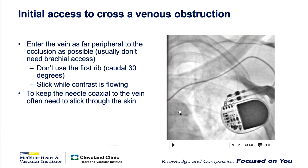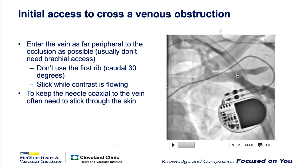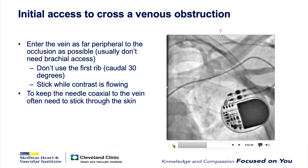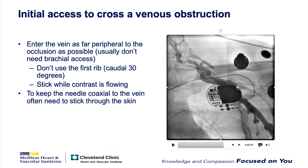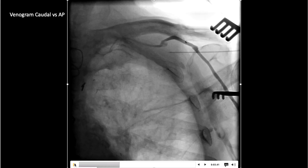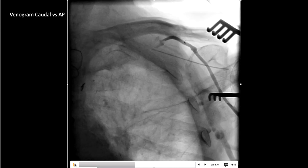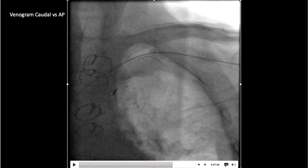For initial venous access, you need to enter the vein as far lateral as possible. In the AP projection it may look like sticking here will hit the lung, but if you go caudal — 30 degrees of caudal — you realize you can hit the vein anywhere along there. You've got to keep the needle coaxial. Trying to stick within the pocket frequently results in coming at the vein at a bad angle. The caudal approach is important for comfort in hitting the vein peripheral to the occlusion.